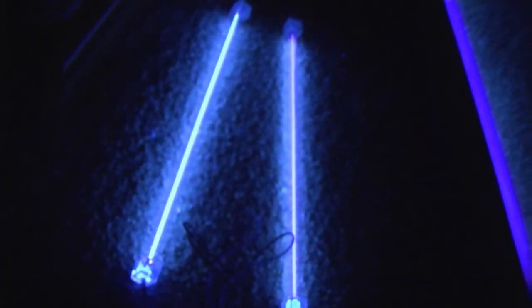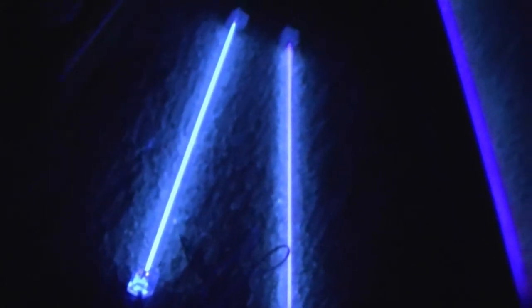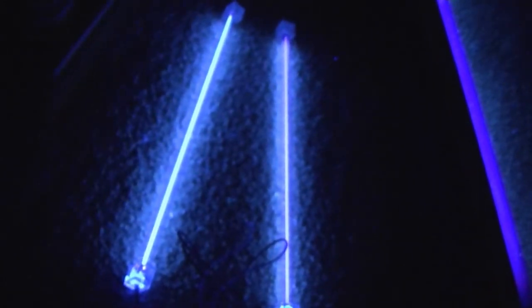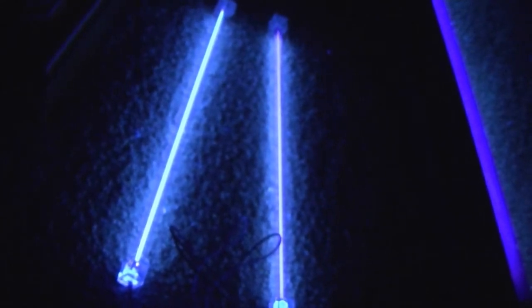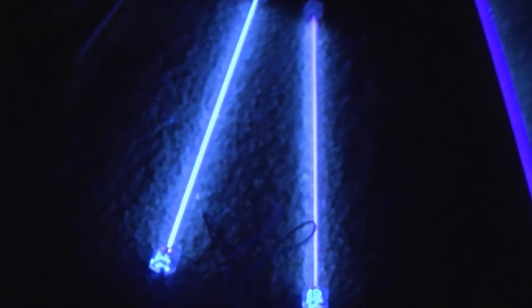This is a pair of cold cathode UV lights. These are commonly used to mod out computer cases. The UV ones in particular are for people who have fluorescent cooling fluids or paint or components inside the computers, like they make little jackets for the cords and such.